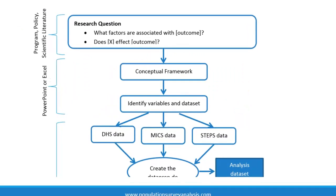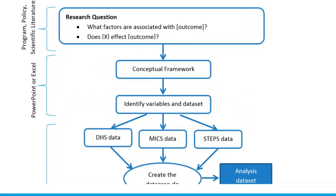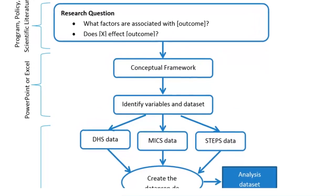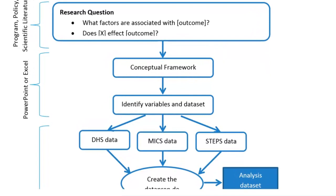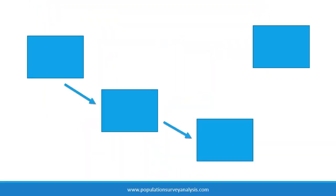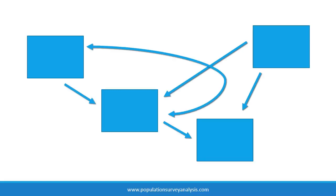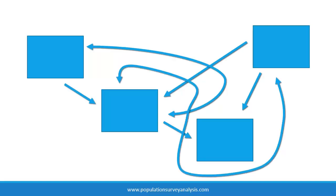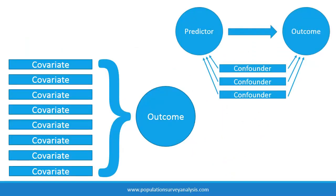Once the questions and associated research objectives are clearly stated, a conceptual framework can be stated in words, but I will encourage you to draw a picture of the factors or variables involved with the research question, with arrows showing how they are related. The conceptual framework can be as simple as the diagrams that we just saw.